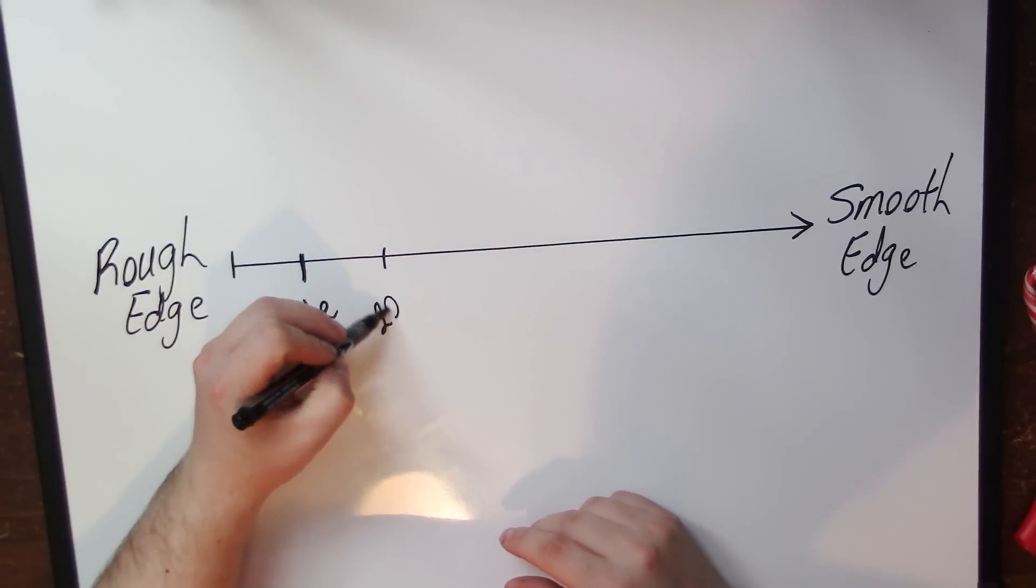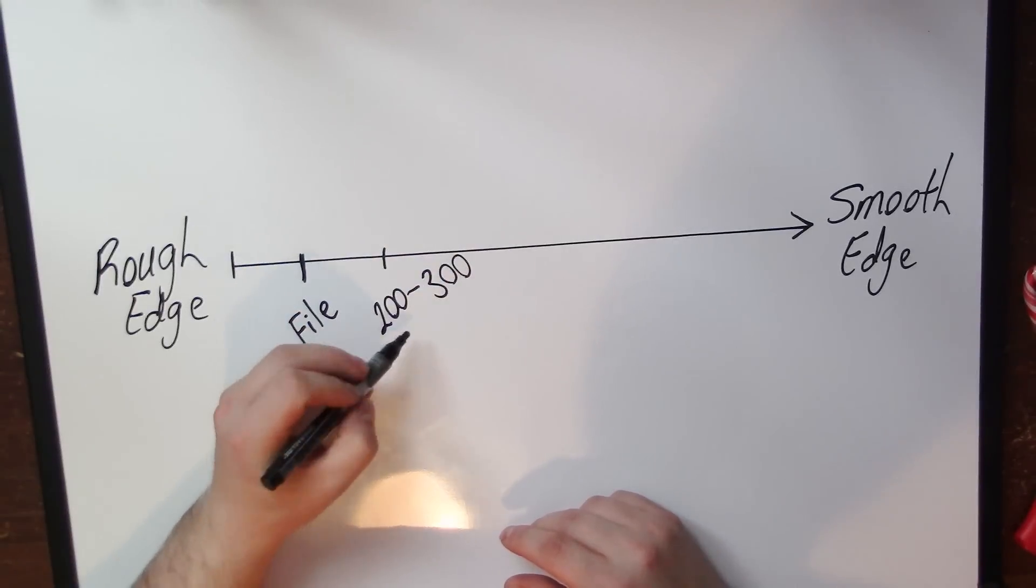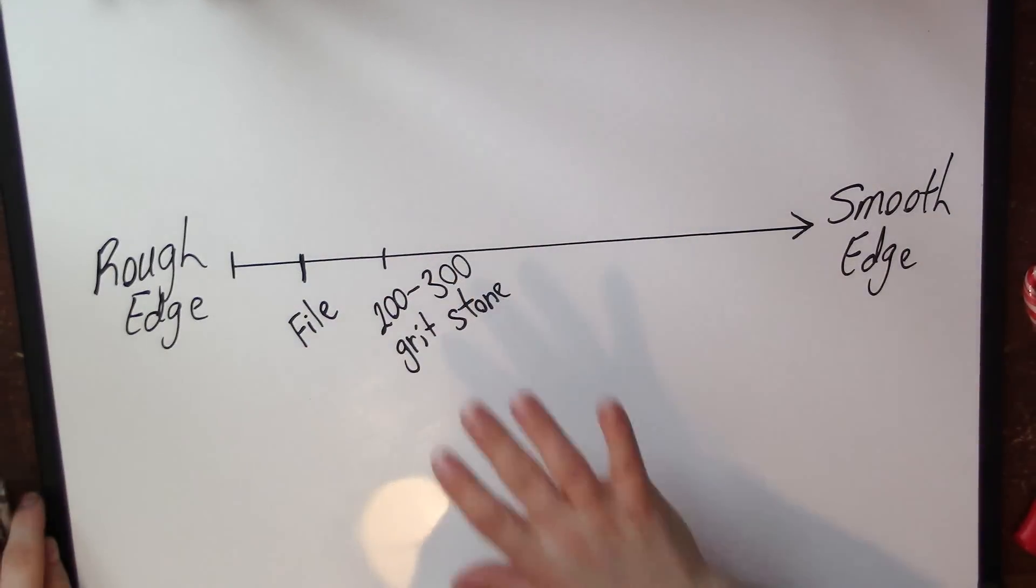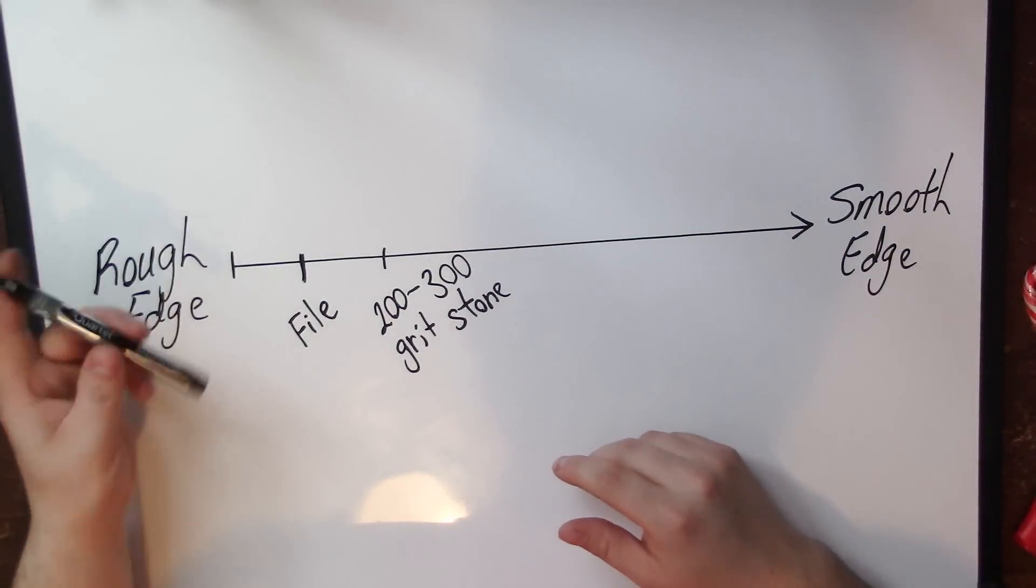The coarse side is also probably around the 200 to 300 range. So for establishing your edge, the next step I would use is a 200 to 300 grit stone. Now remember you don't need all these pieces in your kit. I'm just trying to help you establish the best kit possible from my opinion.